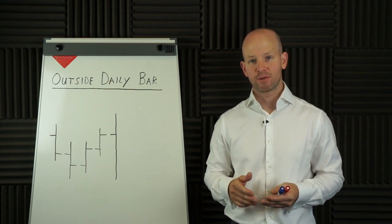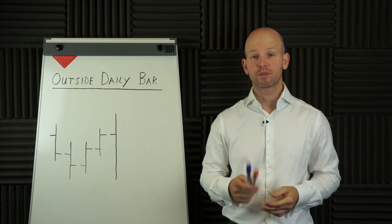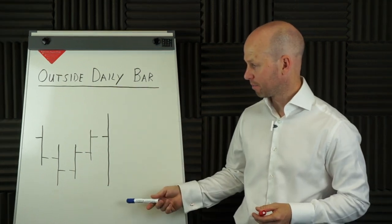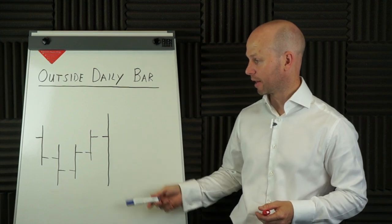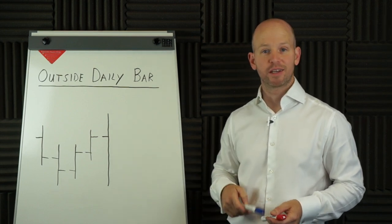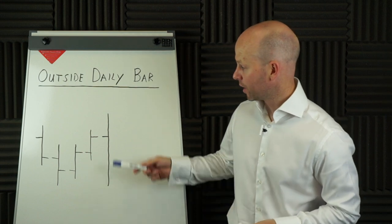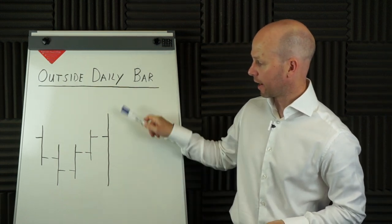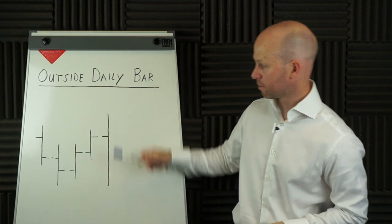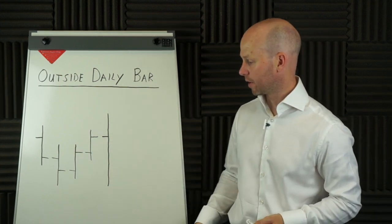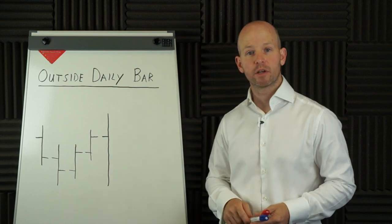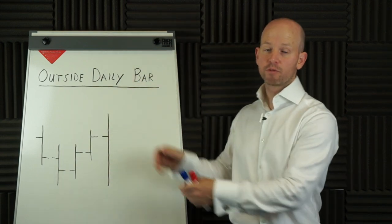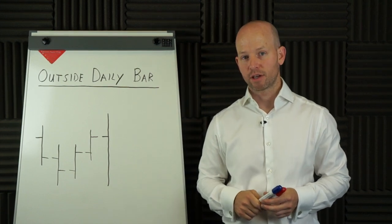The first thing we need to do is identify an outside bar on the daily chart. An outside bar, sometimes called an engulfing bar, is when the range of the bar — the high and the low — are outside of the previous bar. So the high is higher than the previous high and the low is lower than the previous low. The range of the bar is outside of, or engulfs, that previous bar.